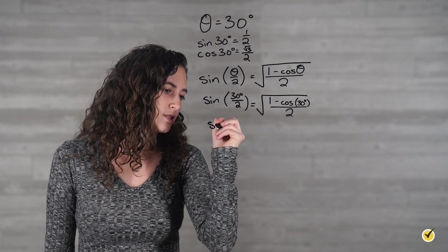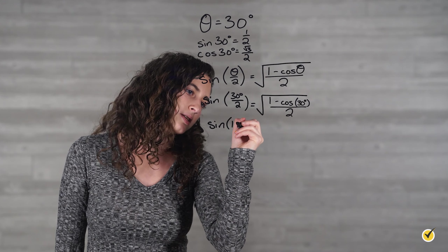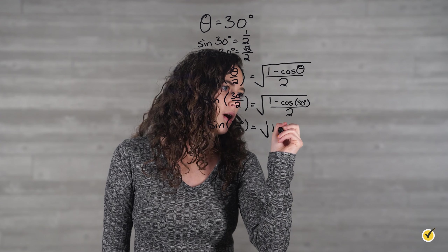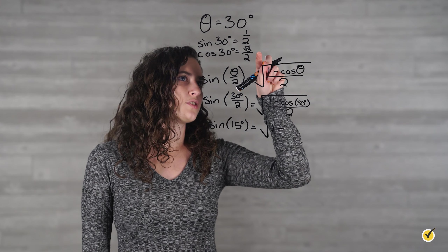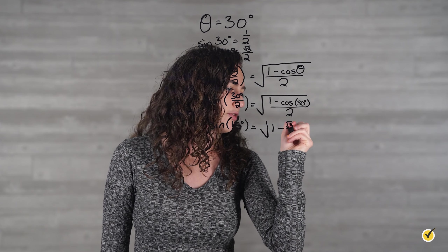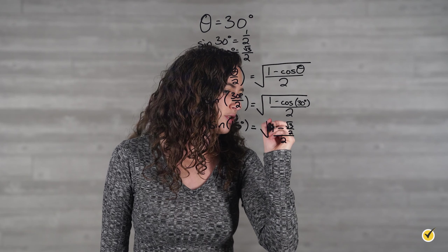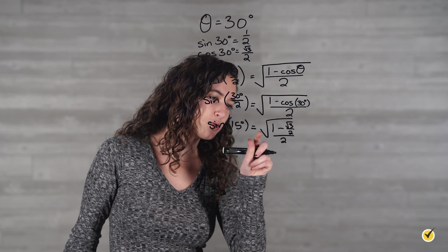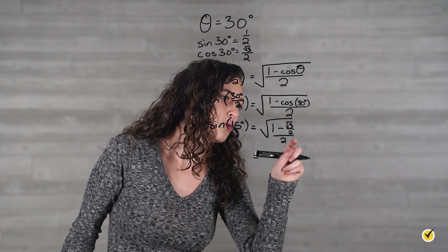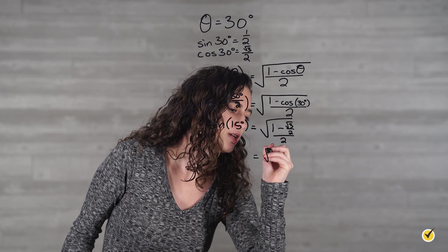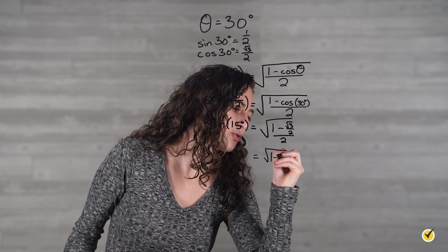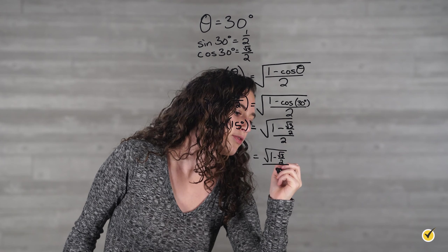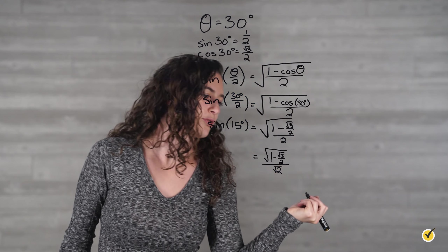So 30 degrees divided by 2 is 15 degrees, so we'll get the sine of 15 degrees, which is what we're looking for, is equal to the square root of 1 minus the cosine of 30 degrees, which is the square root of 3 over 2, all over 2. Finally, we simplify. Because we have the square root of a fraction, we're going to take the square root of the numerator — so the square root of 1 minus the square root of 3 over 2 — over the square root of our denominator, so over the square root of 2.